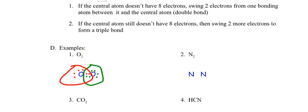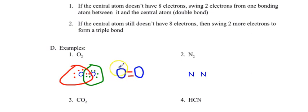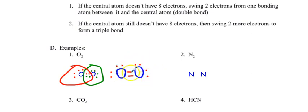Here's the resulting Lewis structure: oxygen double-bonded to oxygen, with two lone pairs around each oxygen. In the structural formula, the double bond is shown as two lines between the oxygens. Each oxygen still has eight electrons — two, four, six, eight — all around each one.